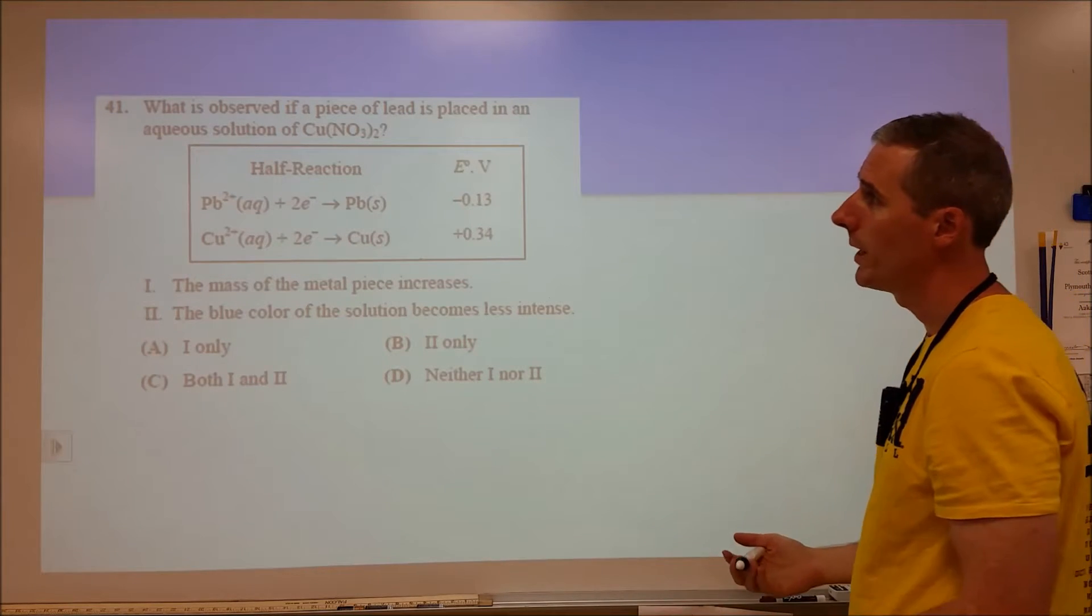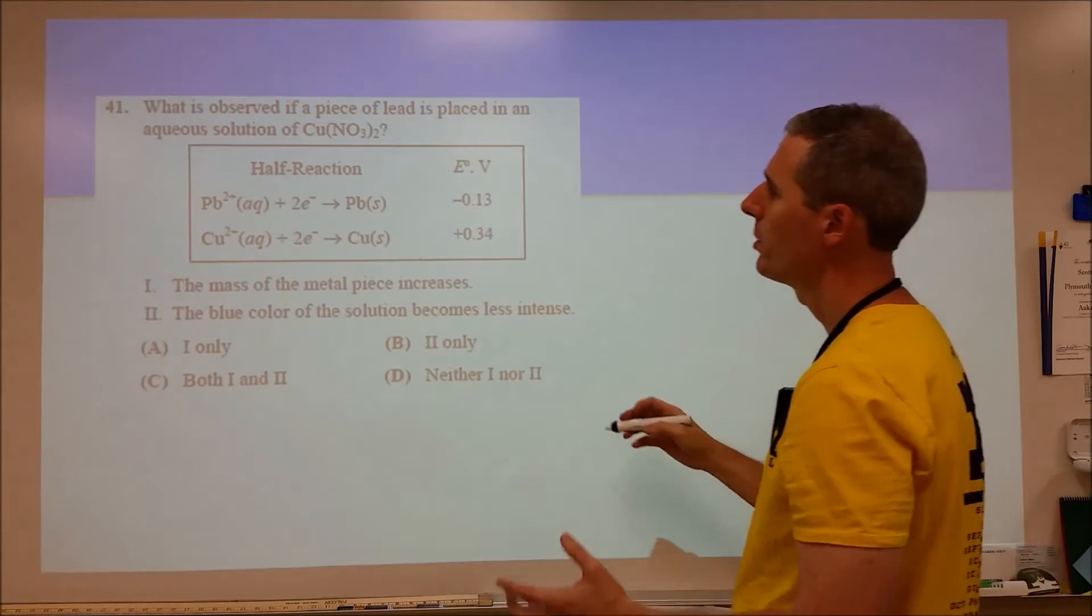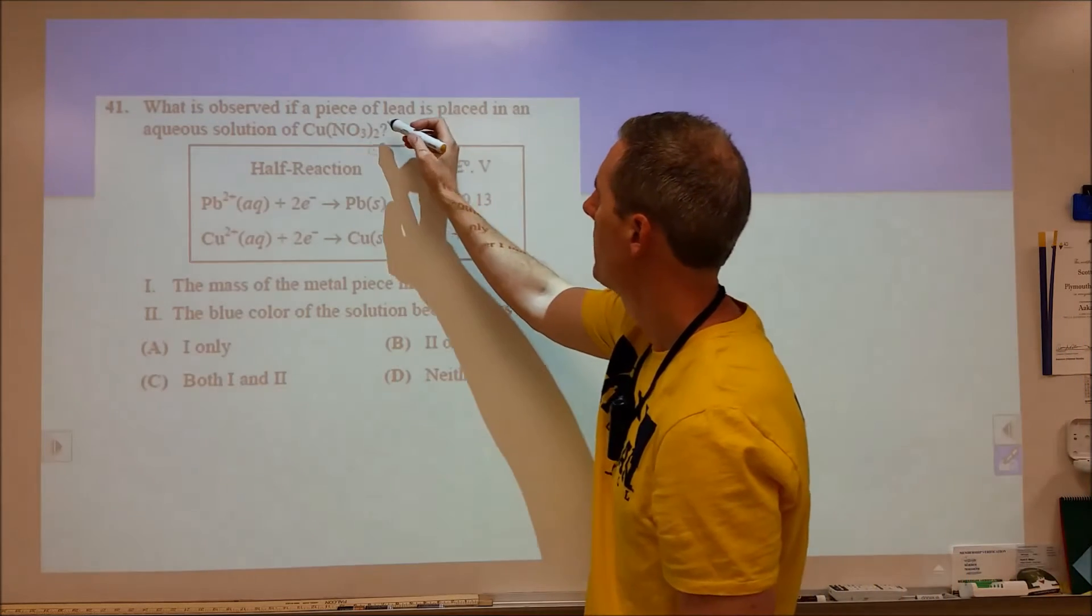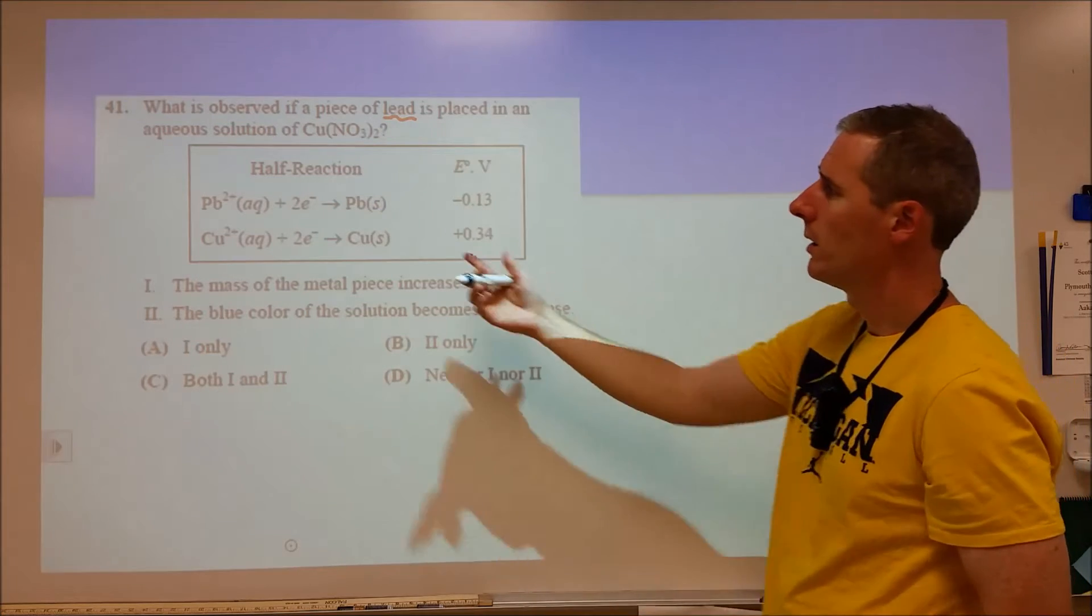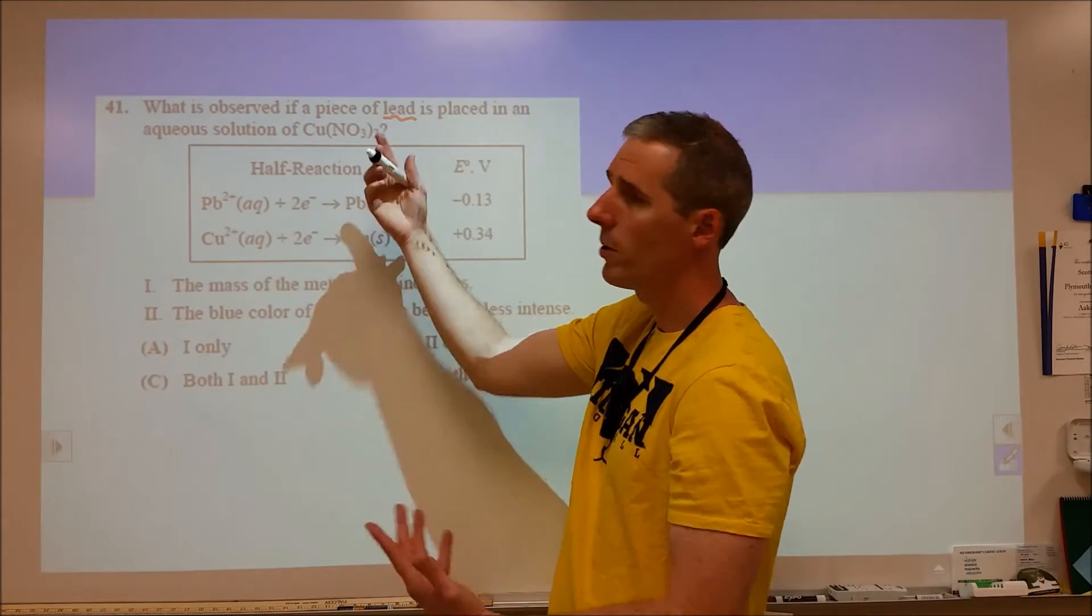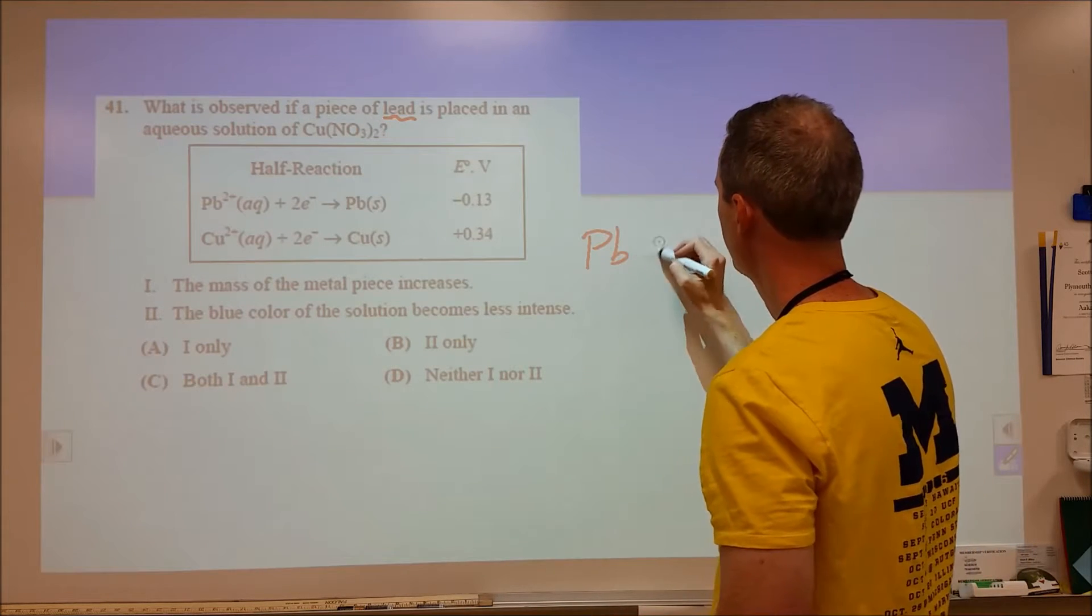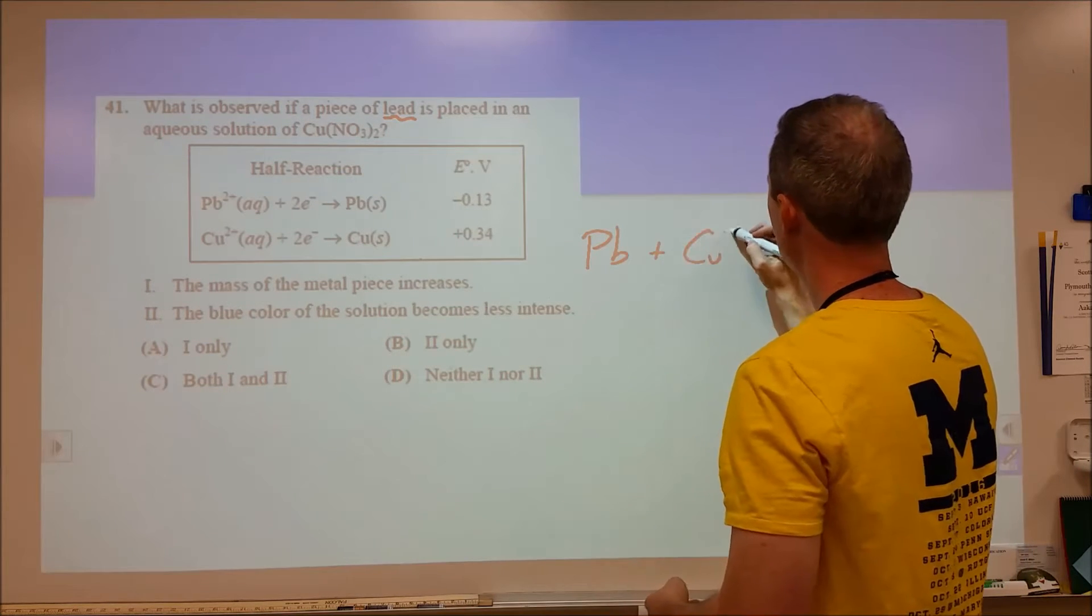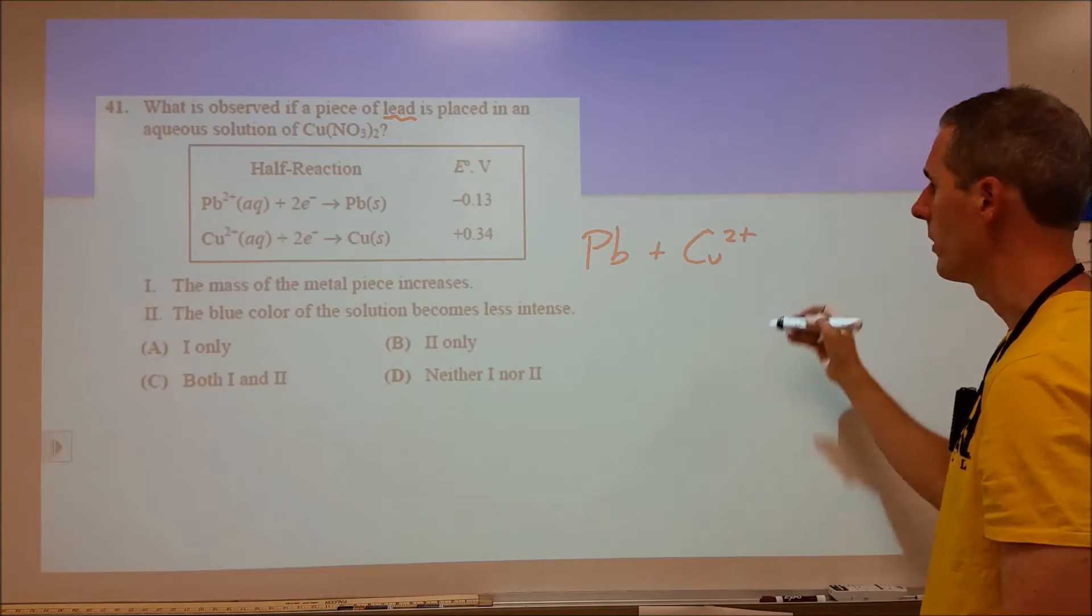Here we're given a reaction between lead metal and an aqueous solution. Something that should be obvious but usually isn't when you're going through chemistry is that whatever you're given is your reactants. You can't have lead 2 plus to start because you don't have any lead 2 plus in this problem. You have lead metal and copper 2 plus ions. When you're writing out a potential reaction, you have to start with those two things.